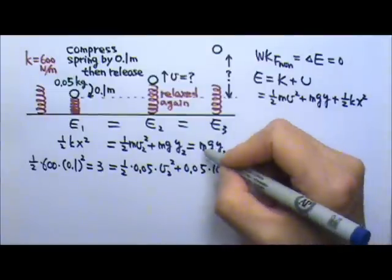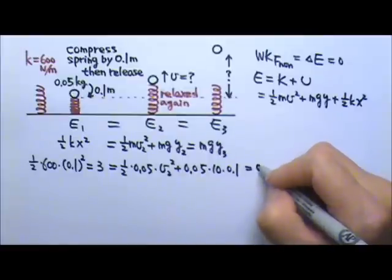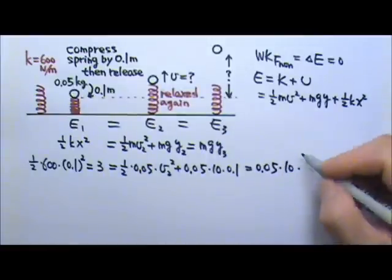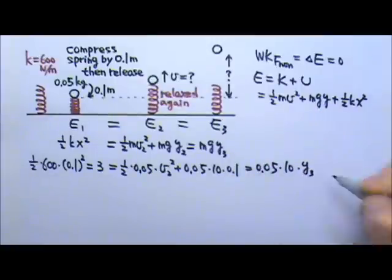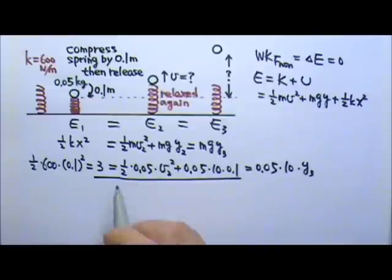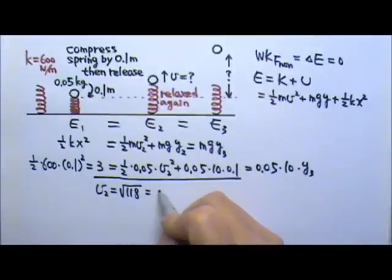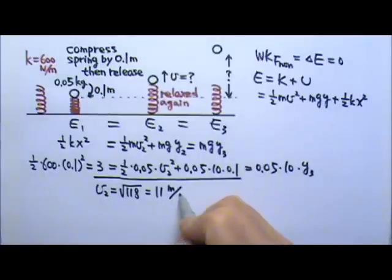And here for the third stage, the mass is again 0.05, I use 10 for g, and we don't know the height. So I can set these two to be the same. 3 equals to that. And then solve for v2. And we'll find v2 to be square root of 118, which is about 11 meters per second.